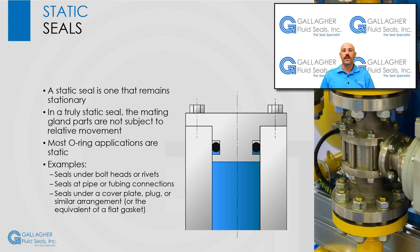Examples of static O-ring applications include a seal under a bolt head or rivet, a seal at a pipe or tubing connection, a seal under a cover plate, plug, or similar arrangement, or in general, the equivalent of a flat gasket.